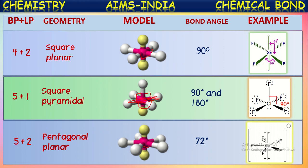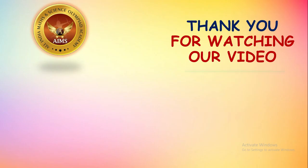In this way the molecular shapes and bond angles are predicted based upon the bond pairs and lone pairs present on the central atom of the molecule. This is about Valence Shell Electron Pair Repulsion Theory — VSEPR theory. Thank you for watching our video, please subscribe to our YouTube channel AIMS Today.